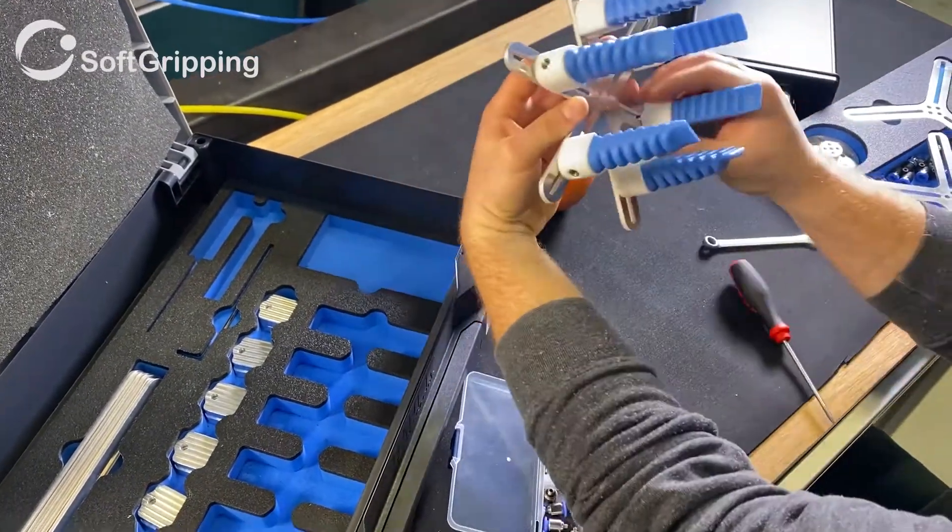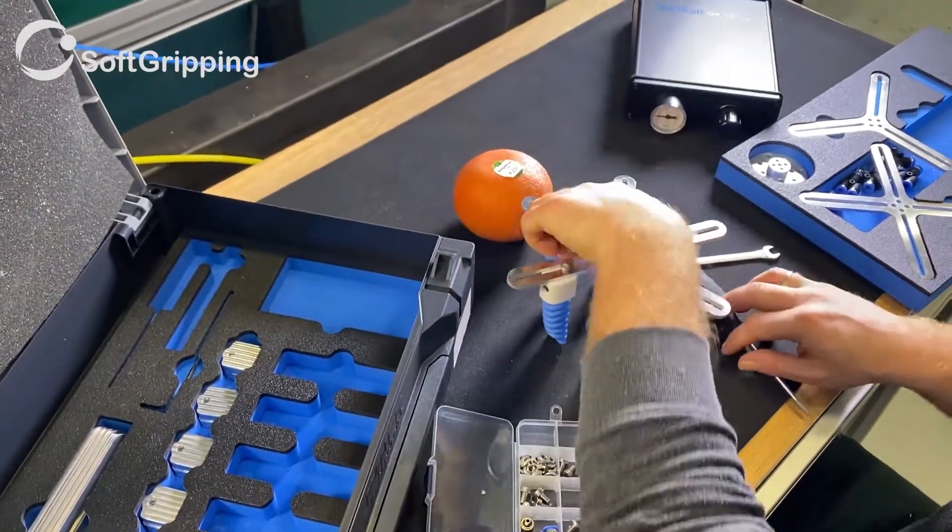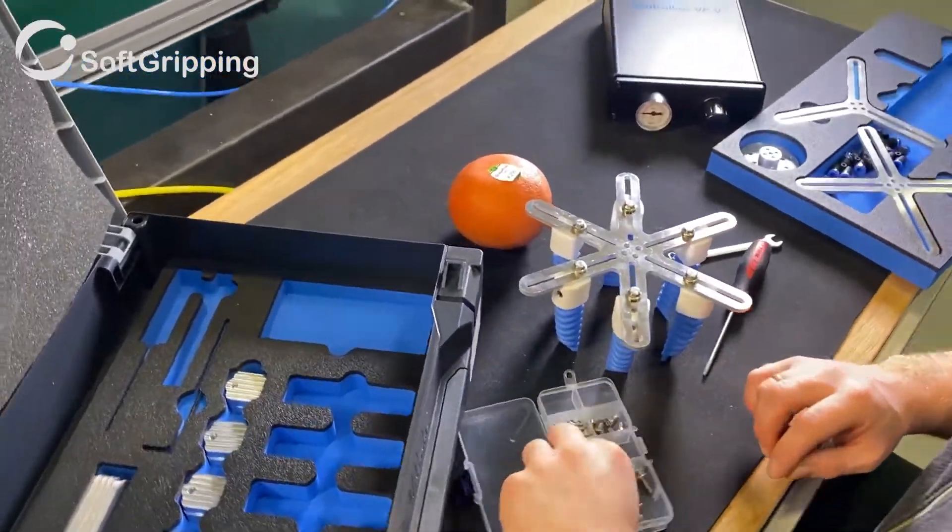When the final shape of the gripper is assembled, it's time for the fittings and hoses to connect the gripper to the air supply.